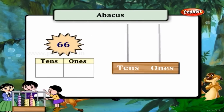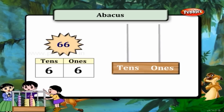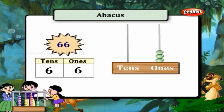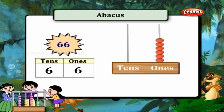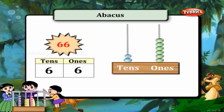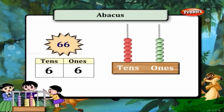66 is 6 ones and 6 tens. So draw 6 beads on the ones line and 6 beads on the tens line.